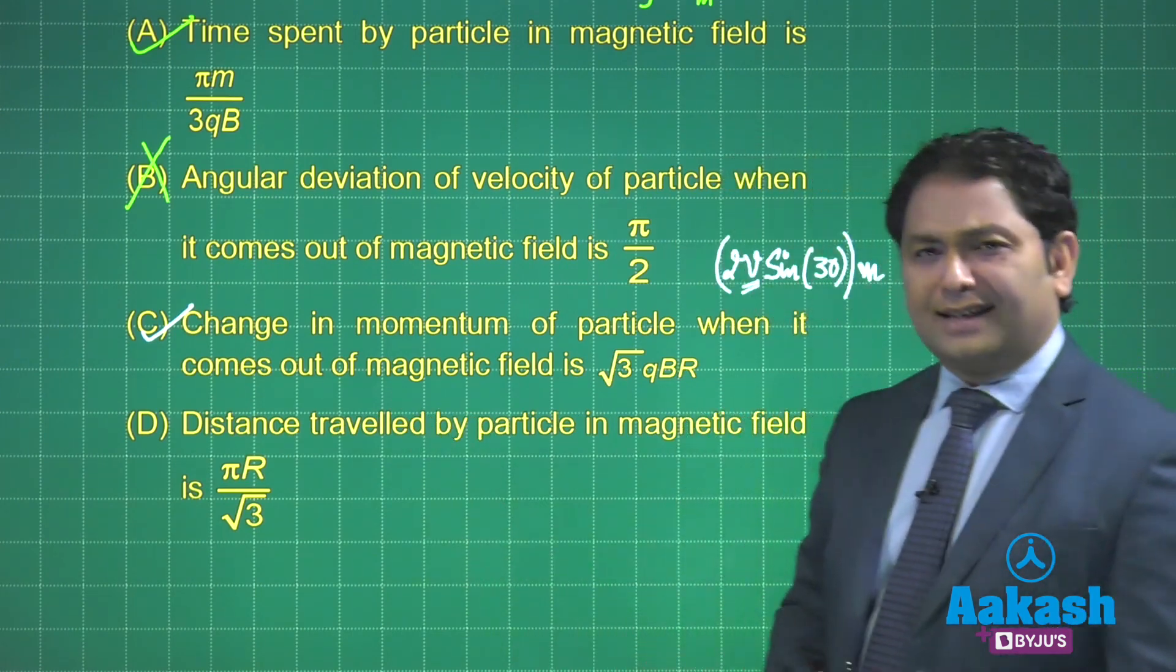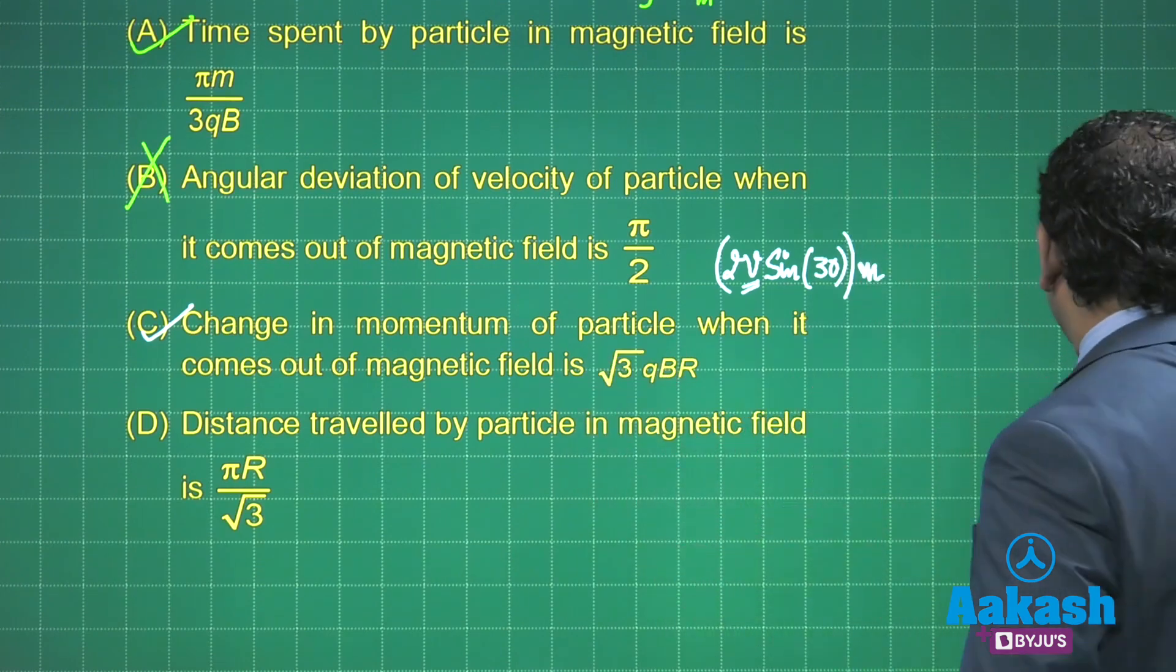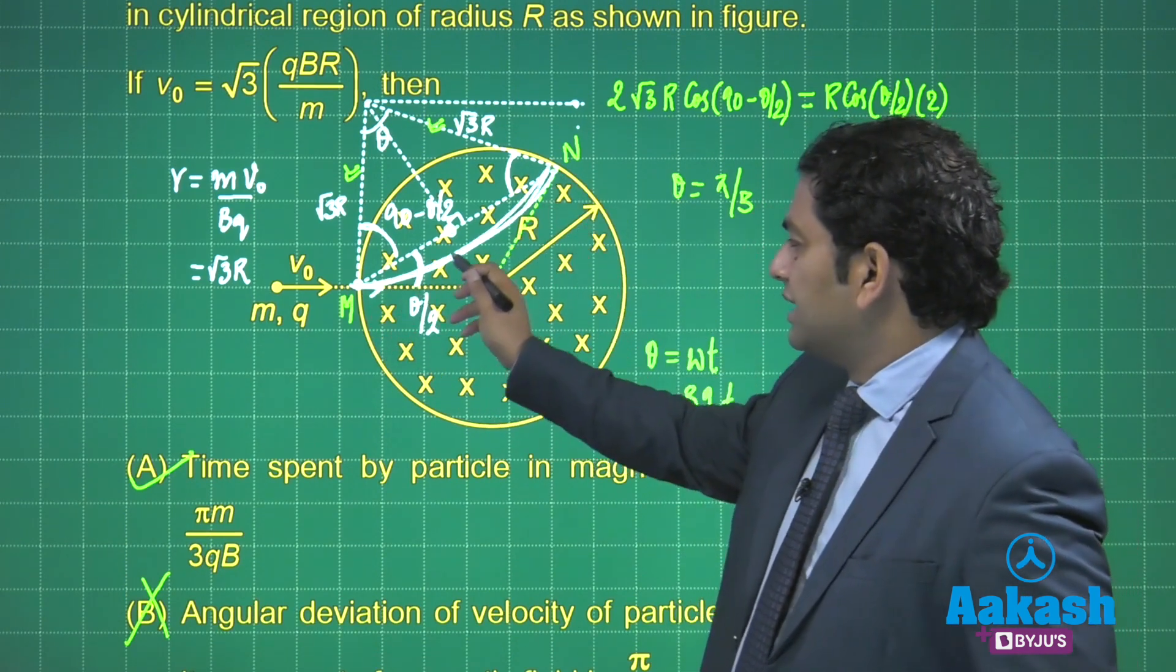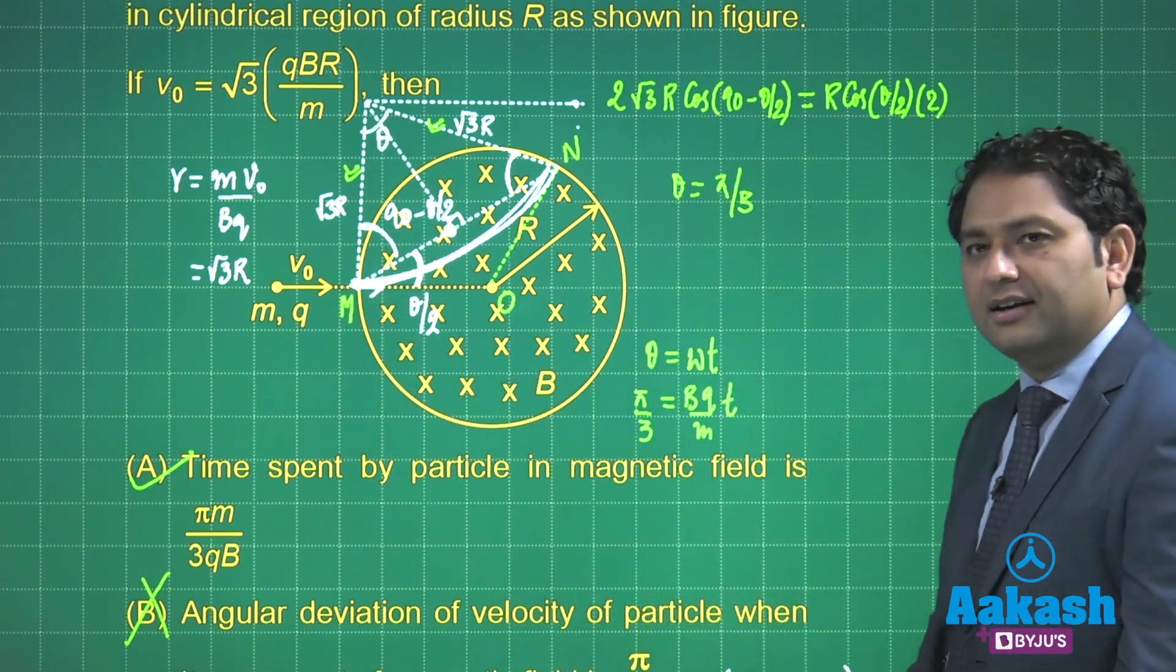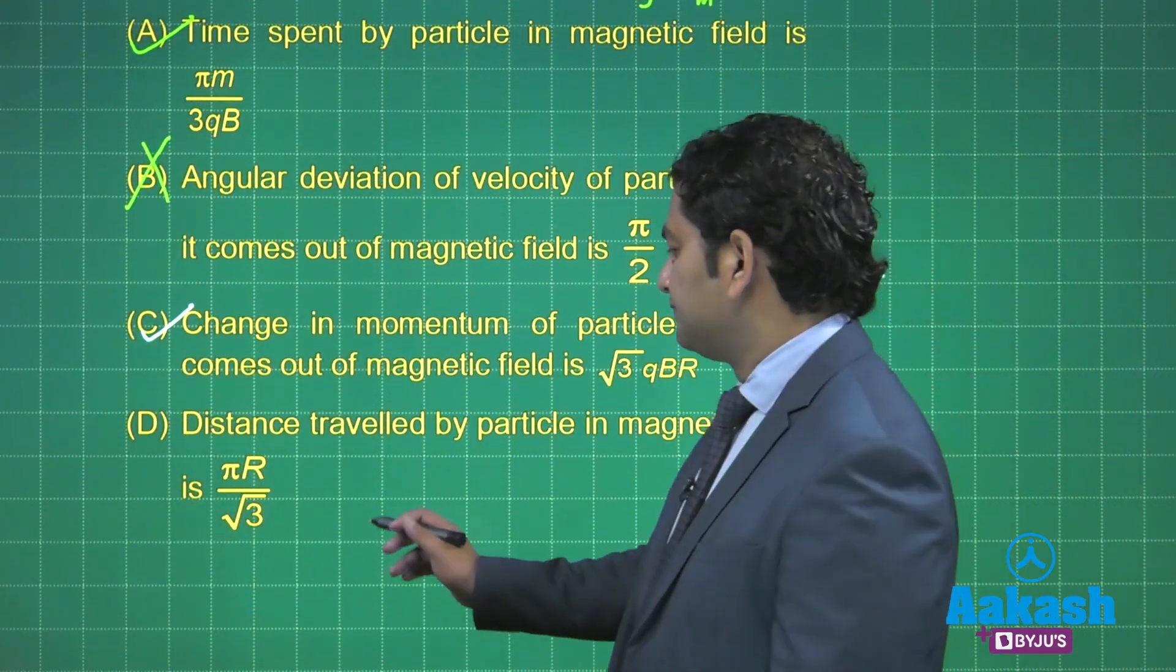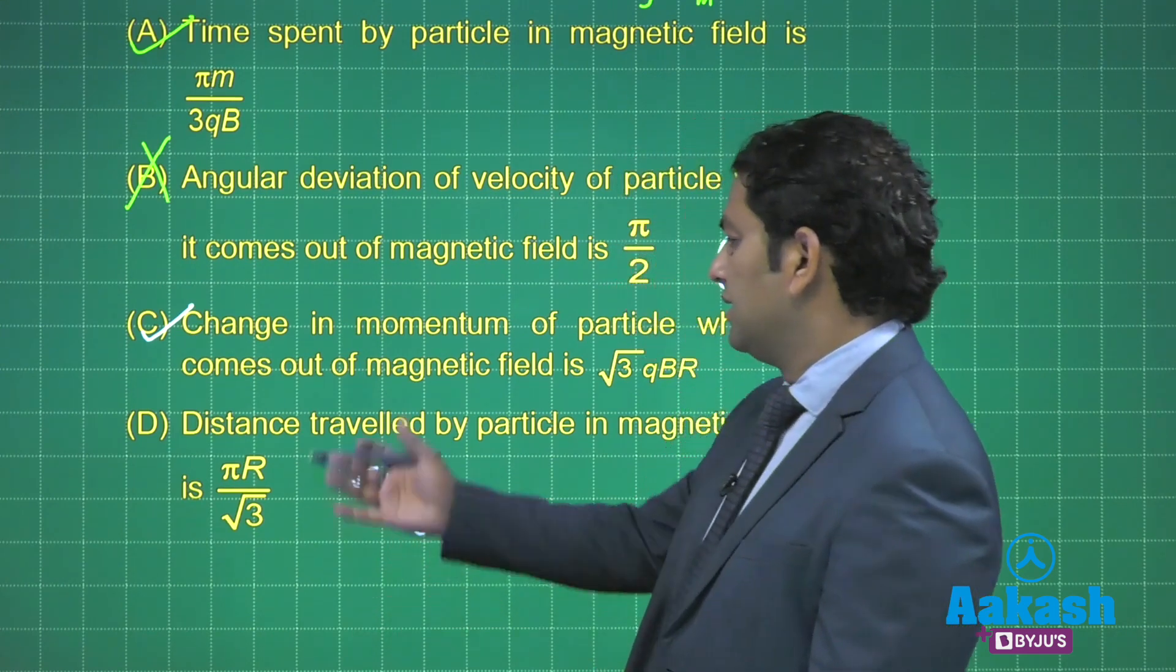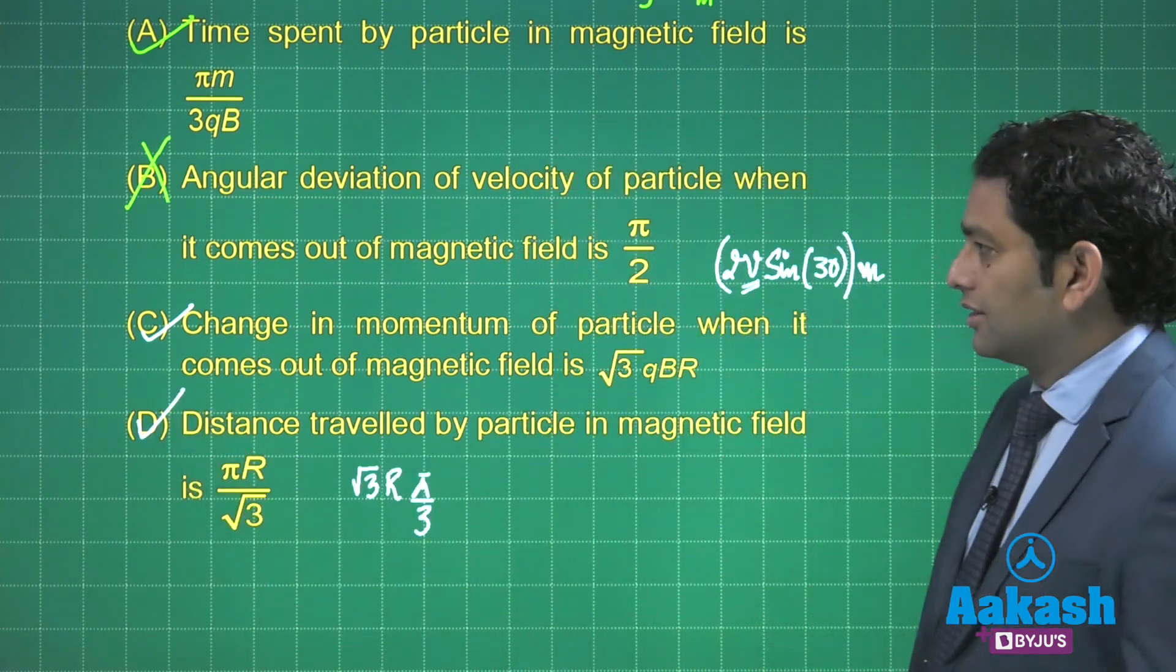How about D? Distance. All right, so you need to find that length which the particle has traveled. This is the distance traveled. So essentially that is an arc of this radius root 3R. So how much will be that arc length? Well not a problem. Root 3R is the radius multiplied by the angle π by 3, and option number D comes out to be correct. It was worth doing.